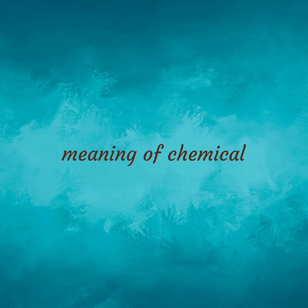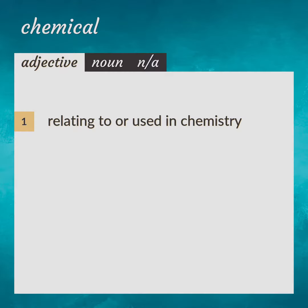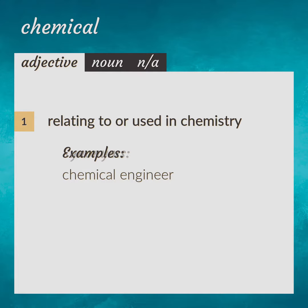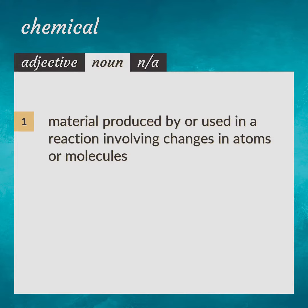Meaning of chemical. Relating to or used in chemistry. Chemical engineer. Material produced by or used in a reaction involving changes in atoms or molecules.